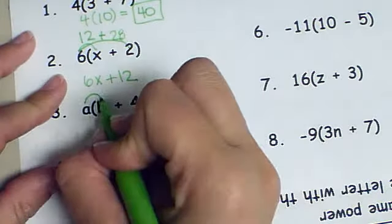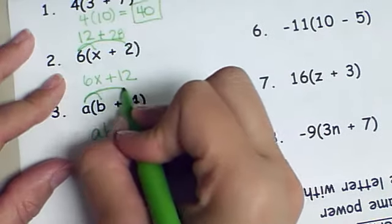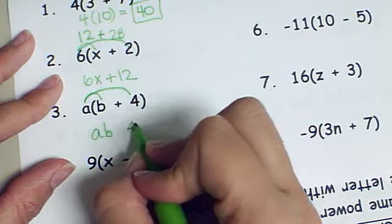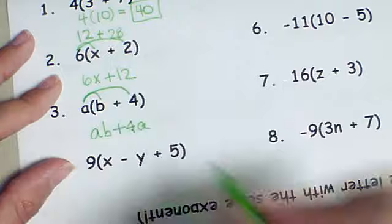If I multiply a times b I get ab. If I multiply a times 4 I get 4a. And the plus sign stays in the middle.